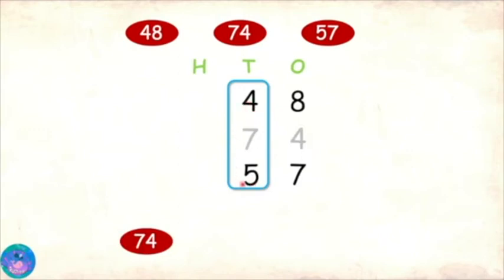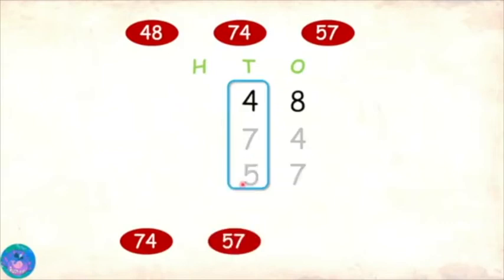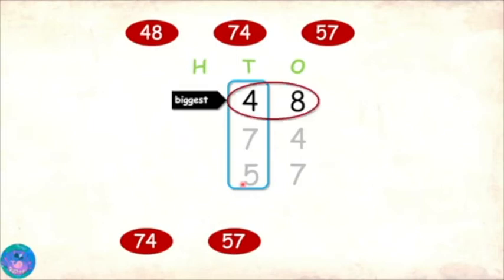Let's write it down. Now we are left with two numbers, 48 and 57. We compare their tens digits — 4 and 5 — and the biggest is 5, so 57 will come next. Now we are only left with one number, so 48 comes last. So we have numbers in descending order: 74, 57, and 48.